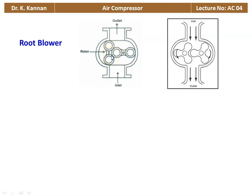The lobes and rotor are rotating, and air is entering through the inlet passage. As the air enters, it occupies the space available. As the lobe rotates, air is entrapped between the space. As the rotor rotates, the entrapped air gets compressed. When the lobe rotates by 90 degrees, the air is exposed to the outlet passage and the compressed air leaves to the discharge side. The space between the lobes and the casing is where air is entrapped, compressed, and the high pressure air is delivered through the outlet.